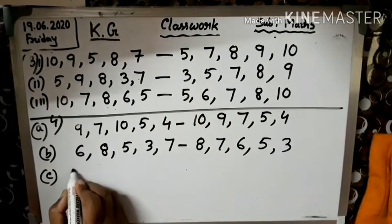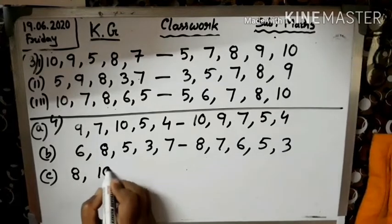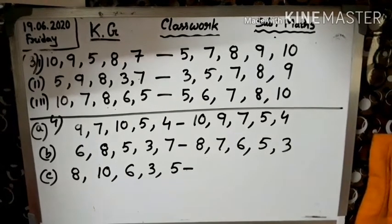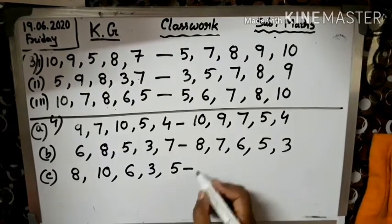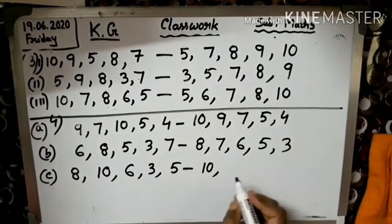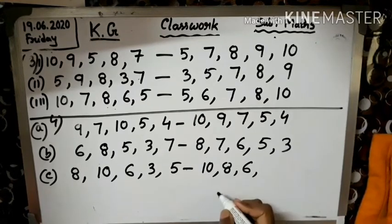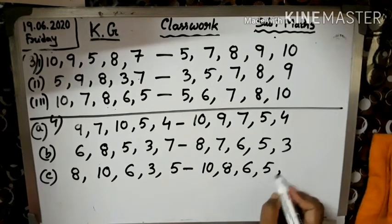C: 8, 10, 6, 3, 5. Iska kya karoge? Start karo. 10 toh hai, 10 se start hota hai. 10, 9, 8, 7, 6 - 6 hai. 5 hai, 3.